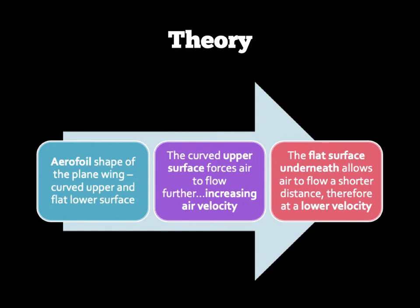Here is a screen to show you the basic theory of how this works. First of all, we need an aerofoil shape. Think about plane wings — if you slice them in half, you can see this sort of aerofoil shape. It has a curved upper surface and a flat lower surface, which is very important. Because of this curved upper surface, the air has to travel a longer distance over the top of the aerofoil, and as it's travelling a longer distance, it generates increased air velocity.